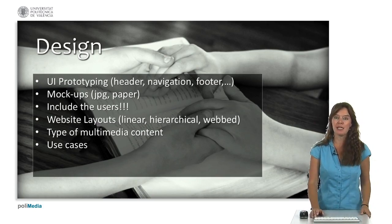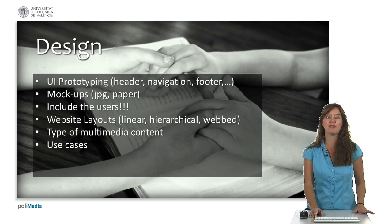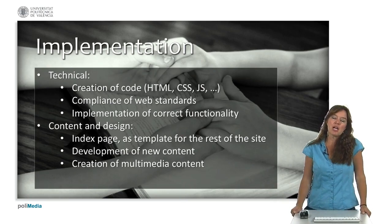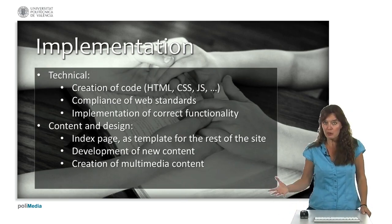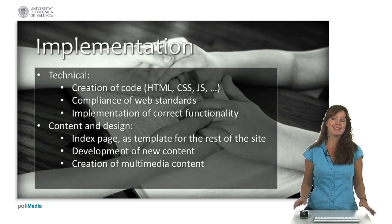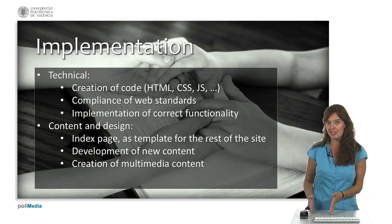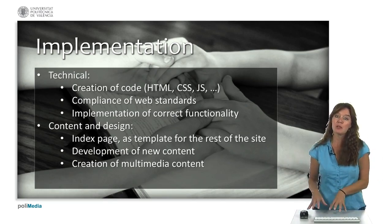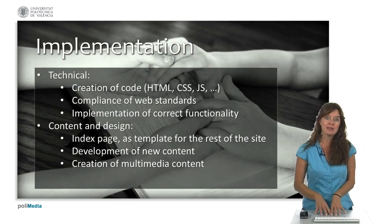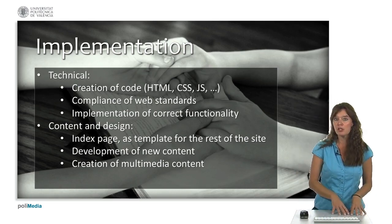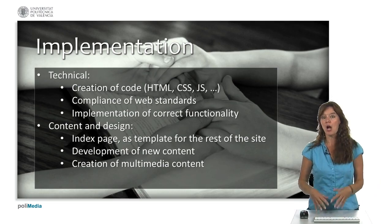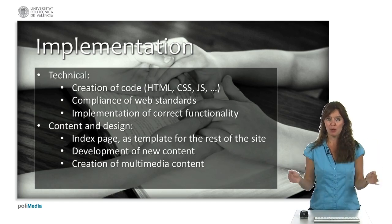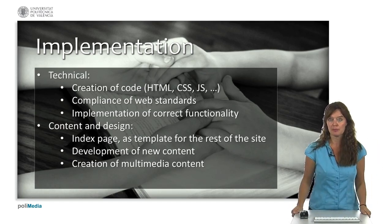With prototypes and mock-ups of the user interface ready, we can start implementation. For a website, we do two things: the technical implementation — writing HTML, JavaScript, and cascading style sheets — to make sure it looks as designed, and we also create the content and design: choosing colors, fonts, creating multimedia, and developing new content.